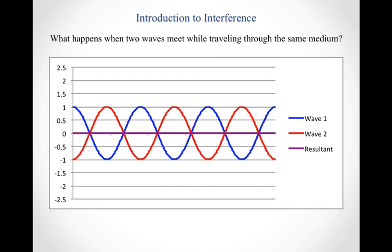This keeps happening until the resultant wave disappears entirely. At this moment, the peak of wave 1 sits at the trough of wave 2. Whatever the amplitude of wave 1 is at a given point, wave 2 has the same amplitude but on the opposite side of the center line. Adding a positive value to an equal negative value gives 0, so the waves completely cancel out all the way across.